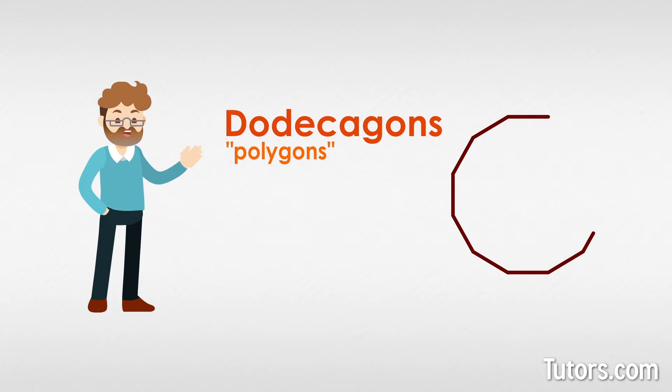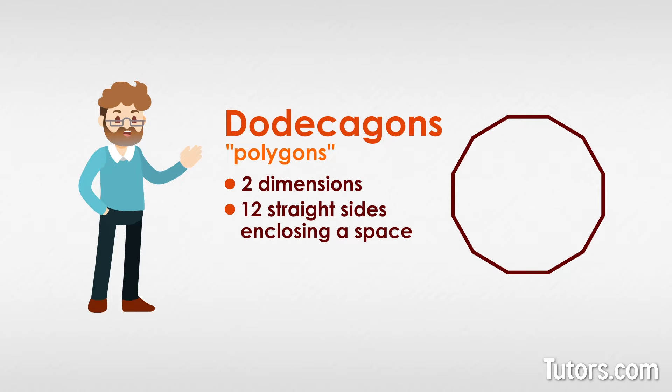A dodecagon is a type of polygon. It has two dimensions, 12 straight sides enclosing a space, and 12 interior angles.